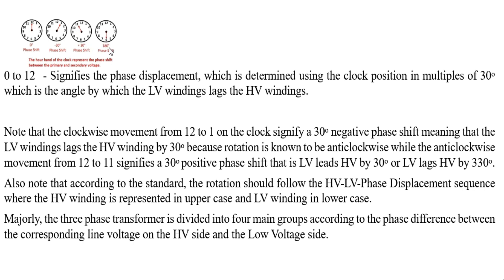You should understand this clock movement because if you don't understand it at this level, you will not be able to understand the vector diagrams we are going to draw. Your clock is the symbol of movement — one hour movement is 30 degrees from 12 o'clock. If you are moving from 12 to 6, that is 180 degrees. If you are moving from 12 to 3, you are moving 90 degrees.